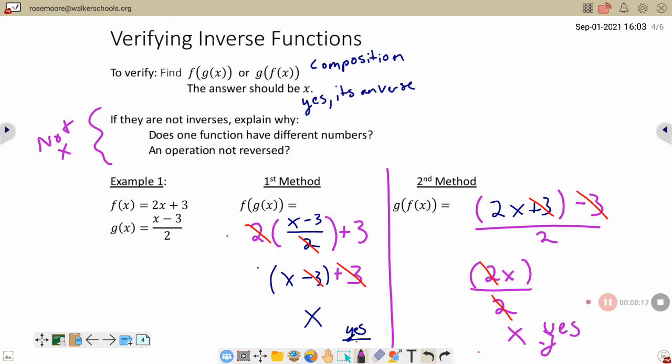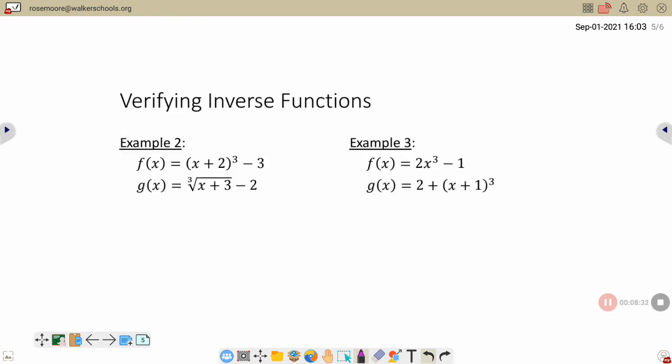So it doesn't matter what order you do it. If you do f first or g first, the key is they have to cancel out completely. And in order to get full credit, you have to show each step canceling. You can't just like, well, it cancels and move forward. Show me.